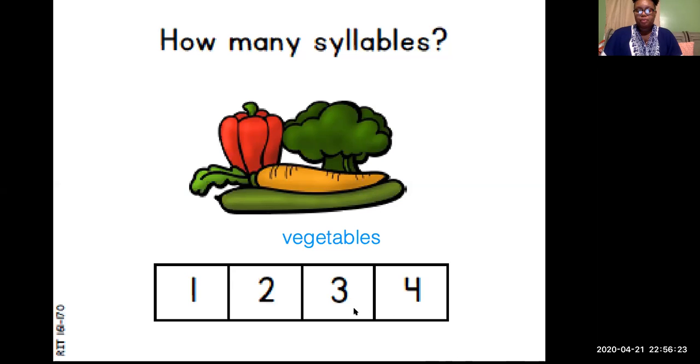Give me one second while I pull up my pen. Remember our rule where we only have one vowel sound per syllable. Vegetables. I'm looking at all of my vowels, and I know I only can have one vowel sound per syllable. So this is one, two, three, four. Awesome job, friends. You have been amazing today.